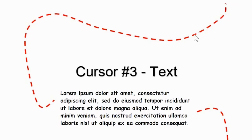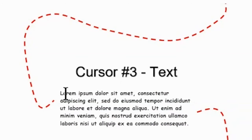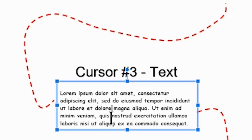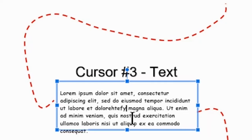If you are typing, your cursor will transform again into the typing cursor. It looks like a capital I and helps you select where you want to begin typing. Be careful, it's not enough to position the typing cursor where you want to type. You have to click so that a blinking vertical line appears.